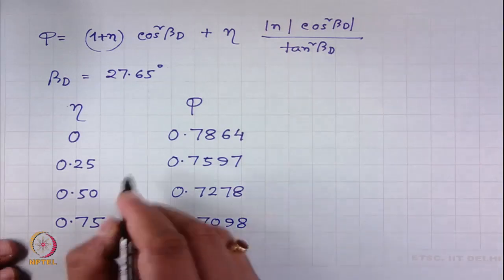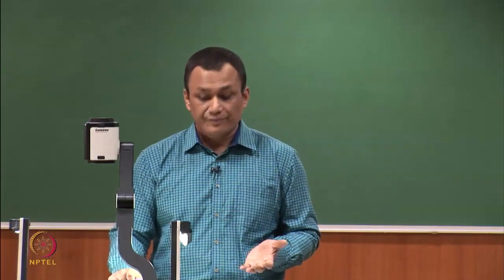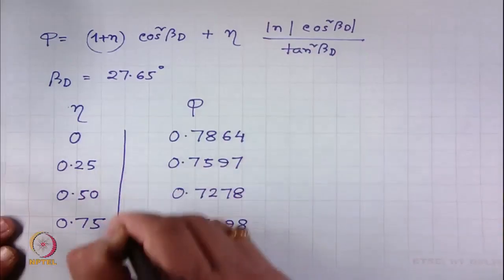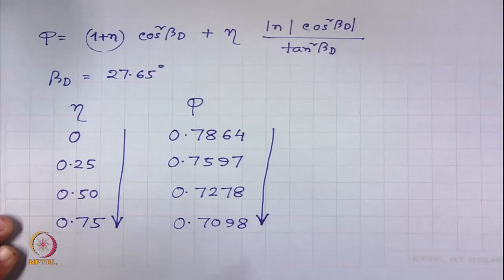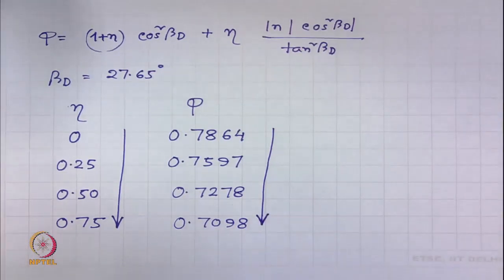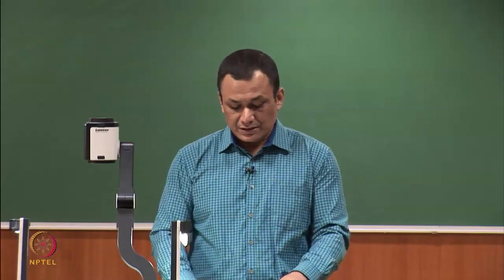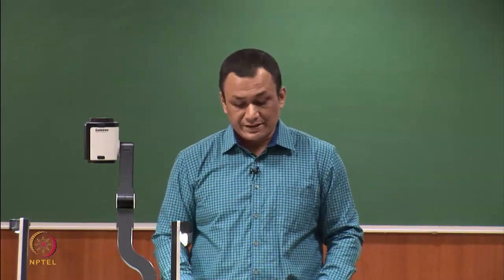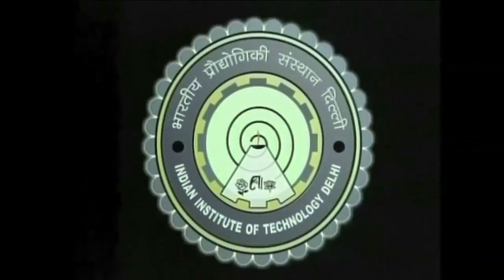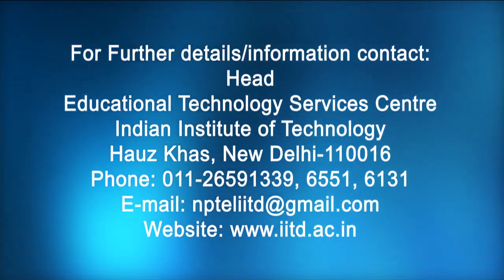What we see is that for a given yarn where beta_d is fixed constant at 27.65 degrees, as the contraction ratio increases the tensile force utilization coefficient phi decreases. This we see from this numerical problem. We have now solved numerical problem 6 as well. Module 8 ends here. Thank you very much for your attention.